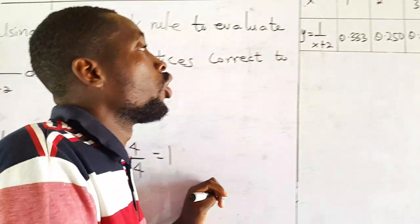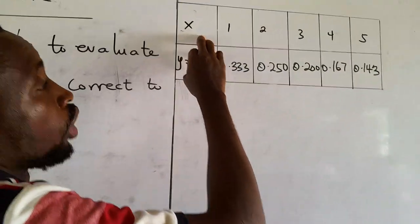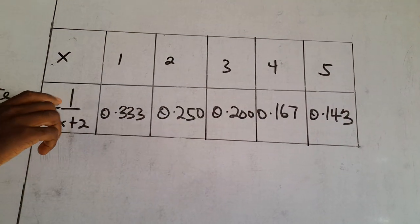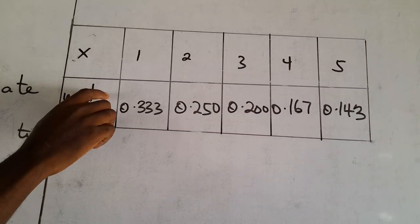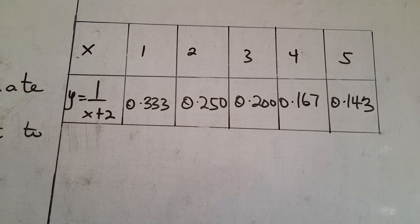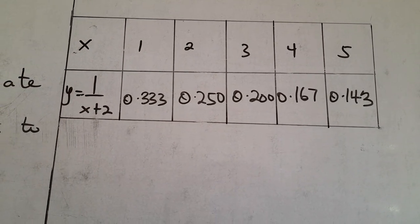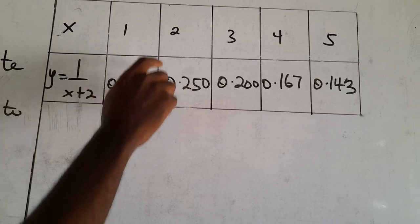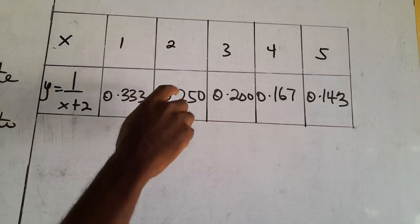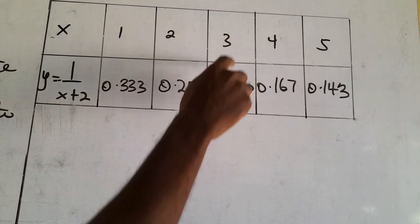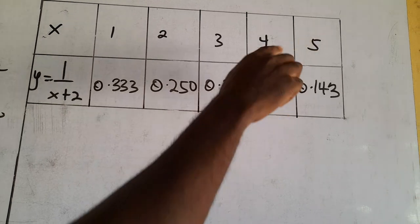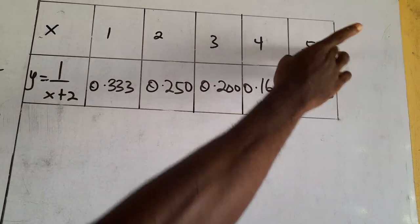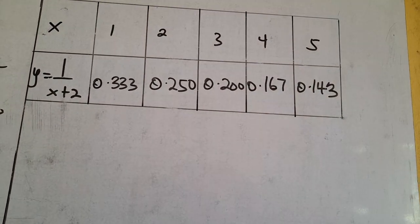We construct a table of values for x: 1, 2, 3, 4, 5. Then we substitute into the function y = 1/(x+2) to get the corresponding values of y. Substituting 1 gives 0.333; substituting 2 gives 0.250; substituting 3 gives 0.200; substituting 4 gives 0.167; and substituting 5 gives 0.143.